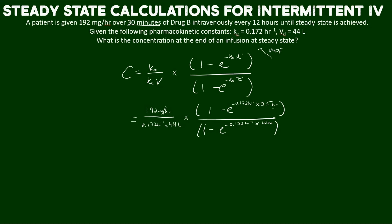In the bottom part of the equation we have the exponent, again to the elimination rate constant, times 12 hours because we're told the drug is given every 12 hours. So that is our dosing interval.